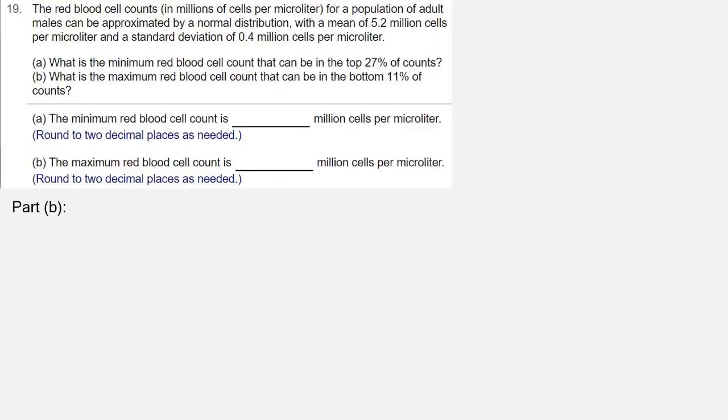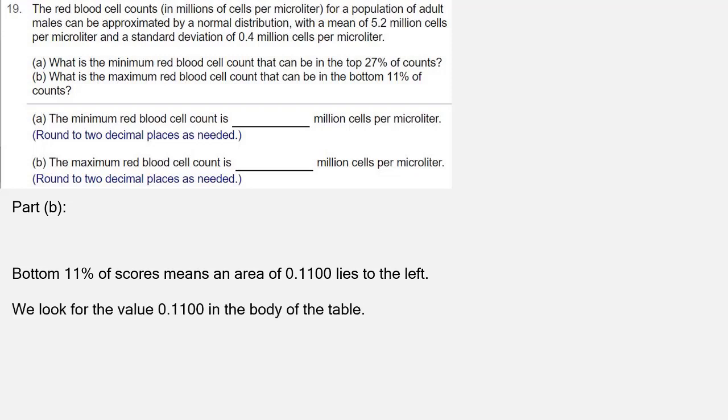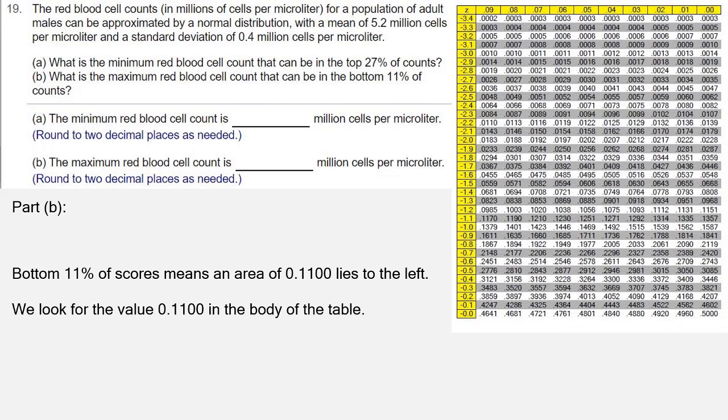For part b, we're looking for the bottom 11% of scores. That means we're looking for an area of 0.1100 to the left. We're going to look for that in the table, because the table represents areas to the left. We need the negative side of the table.